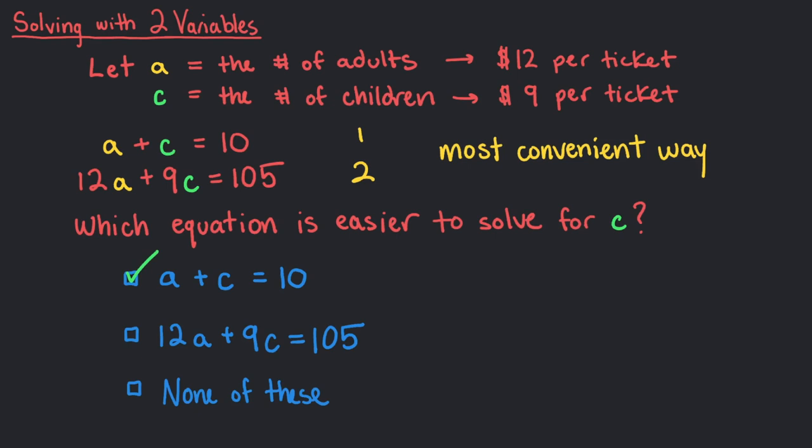Exactly! a plus c equals 10 is way easier to solve for c than 12a plus 9c equals 105, because all we need to do is subtract a from both sides. This gives us c equals 10 minus a. Step 1 complete.